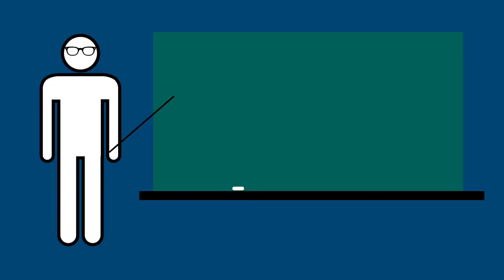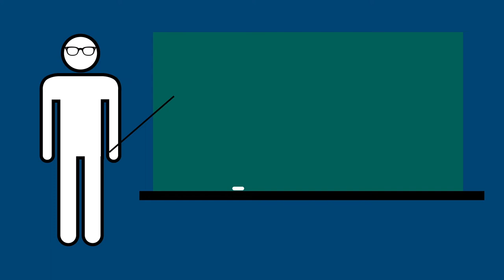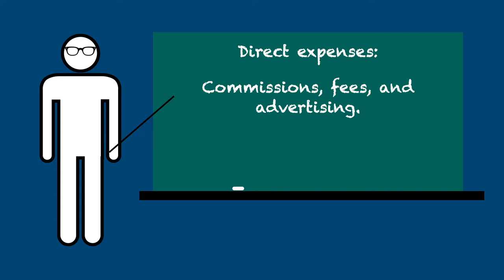First of all, 100% of any direct expenses involved in renting the property are deducted from the rental income. Primary examples of direct expenses would be commissions or fees to rental agents, including online rental platforms such as Airbnb, and the expense of cleaning the unit between uses.